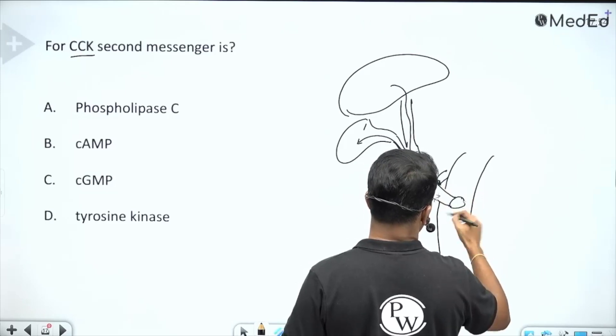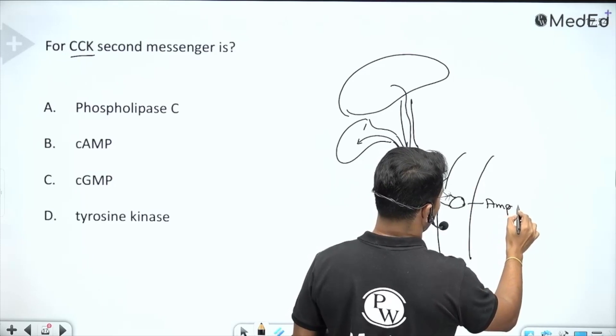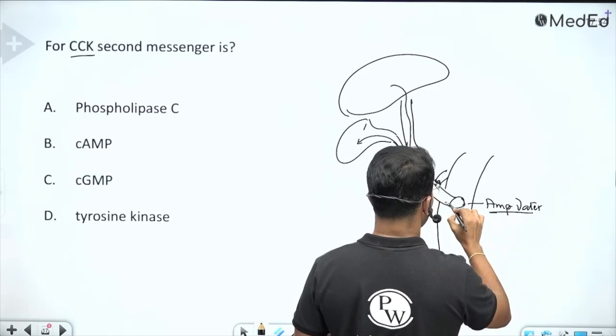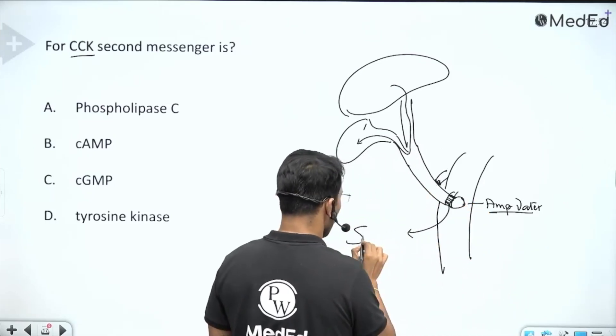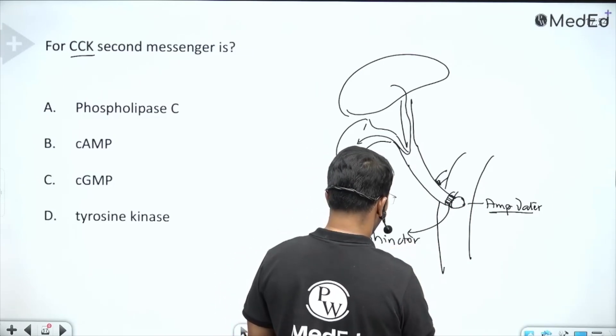There is a combination of pancreatic duct that opens in the duodenum. This is what we call the ampulla of Vater, and there is a sphincter regulating its opening. The sphincter is called sphincter of Oddi, however you want to call it.